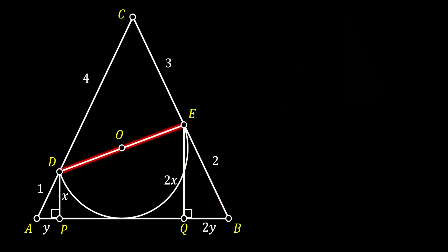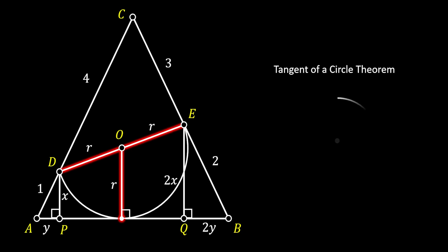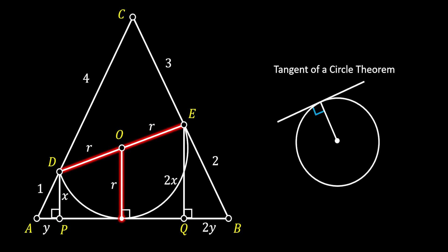Let's focus on the line DE. This line is the diameter of our half circle, so DO and OE both represent the radius. Now let's pull another radius from point O to the intersection point between the base of our triangle and the arc of our half circle. This radius will be perpendicular to the base of the triangle. We know this by using the tangent of a circle theorem, which states that if we pull a radius to the tangency point, that radius will always be perpendicular to the tangent line.